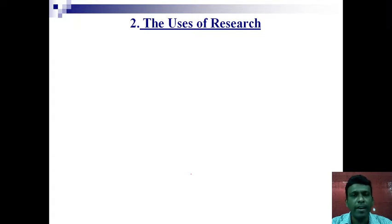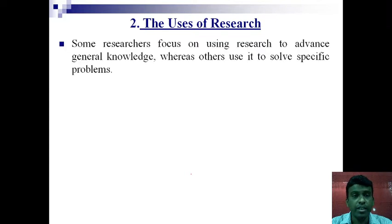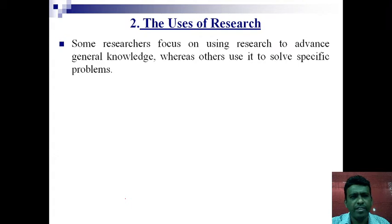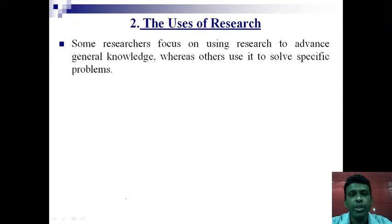Under uses of research, research is classified into two types: basic research and applied research. Basic research is also known as fundamental or pure research. Some researchers focus on using research to advance general knowledge, whereas others use it to solve certain problems at hand. For example, when Newton discovered the law of gravitation, he did not have any specific problem at hand — he worked on it and increased the knowledge pool of human beings and the entire scientific society. Hence his research is classified as basic or pure research.